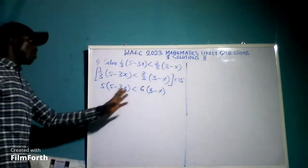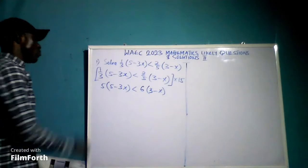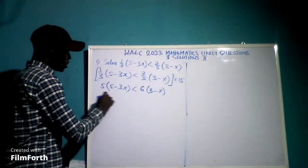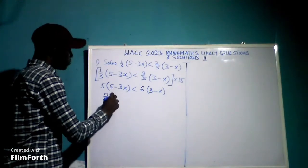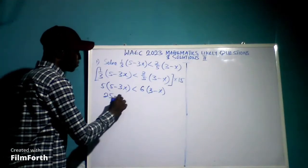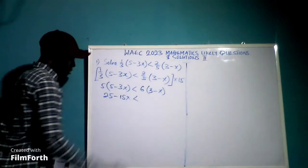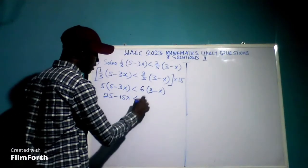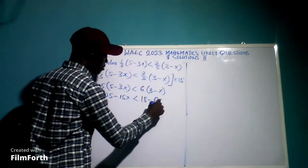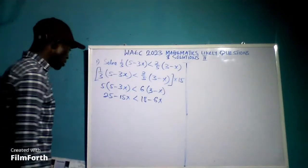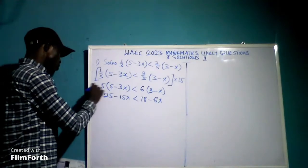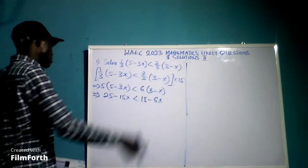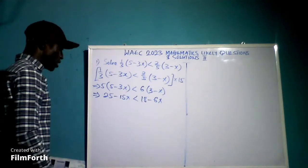We have simplified a little. Now, opening the brackets: 5 times 5 is 25, and 5 times negative 3x gives us negative 15x. The inequality sign is maintained. Then 6 times 3 gives us 18, and 6 times negative x gives us negative 6x.